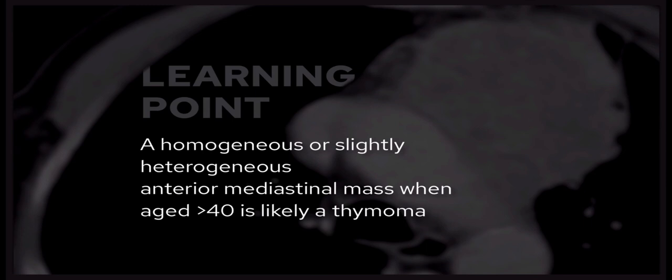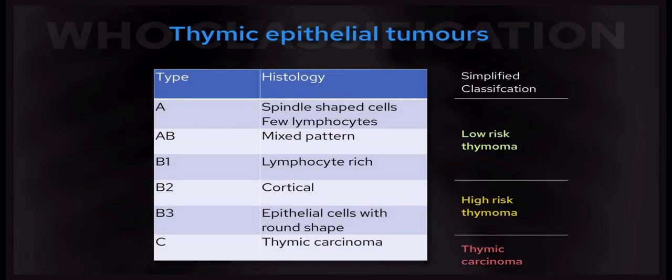Moving on to thymic abnormalities: thymomas are uncommon but are actually the most common anterior mediastinal mass. If you see a homogeneous or slightly heterogeneous mass in a patient over the age of 40, it's most likely to be a thymoma. It's useful to think of thymomas as part of the spectrum of thymic epithelial tumors, with low-risk thymomas at one end and thymic carcinomas at the other. The WHO classification correlates with survival rates but has some controversy regarding inter- and intra-observer reproducibility and clinical predictive value. A more simplified system grades lesions into low-risk and high-risk thymomas as well as thymic carcinoma, and there is work to differentiate between these groups on CT.